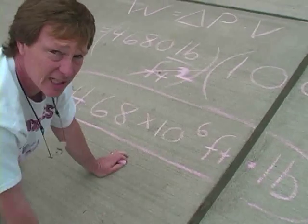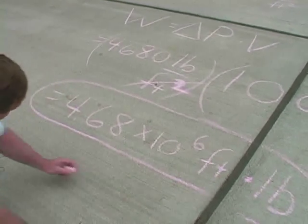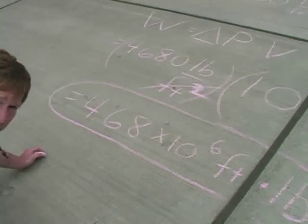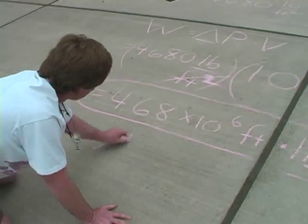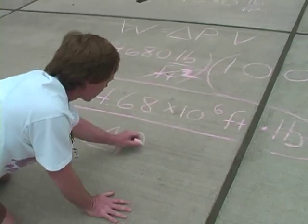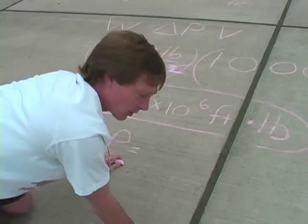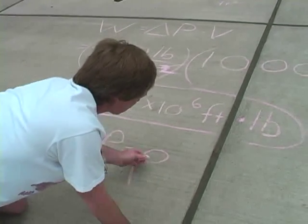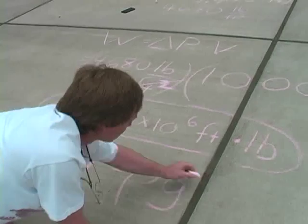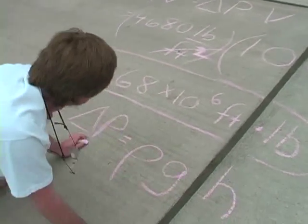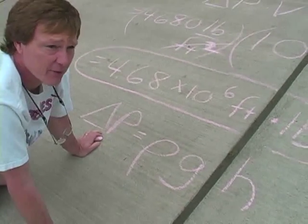The same approach works in metric. The only difference is that if you're doing the calculation in metric, you use mass density instead of weight density, so you take mass density times gravity, still multiplied by height, and then multiply by the volume.